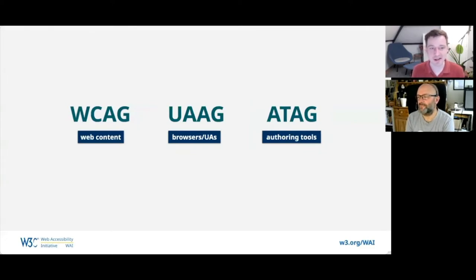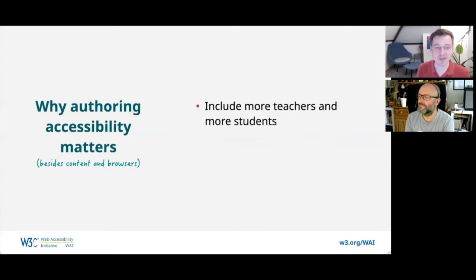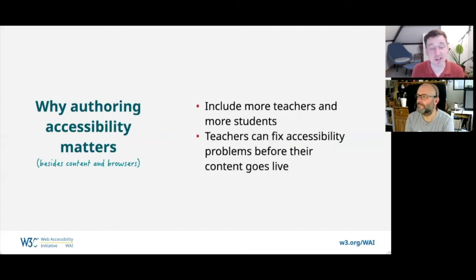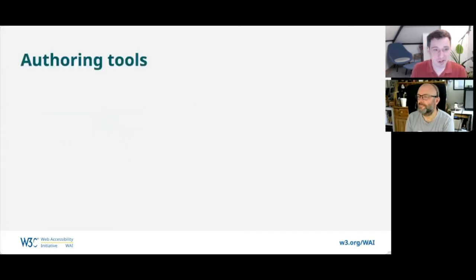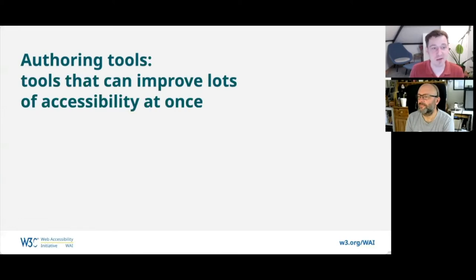With that combination of accessible content, accessible content viewers, and accessible content creation software, we believe the web can truly be accessible. Authoring tool accessibility matters specifically in education because we can include more teachers and more students if our authoring tools incorporate accessibility. If we're able to embed accessibility in the software we use, more teachers and more students can use that software. Because authoring happens early in the process, it also means teachers can fix accessibility problems before their content goes live.